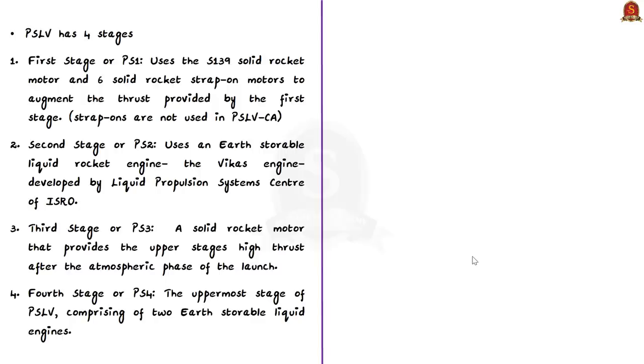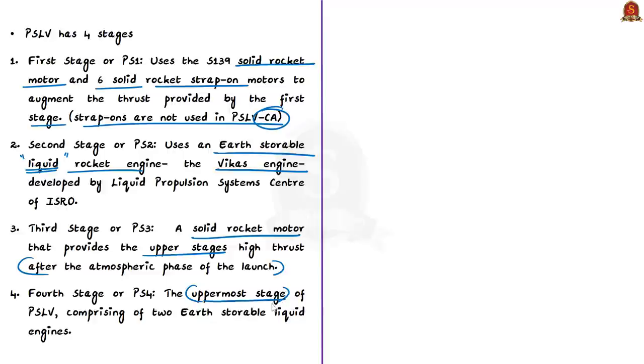PSLV has four stages. In the first stage or PS1, PSLV uses the S139 solid rocket motor. PSLV uses six solid rocket strap-on motors to augment the thrust in its PSLV-G and PSLV-XL variants. However, strap-ons are not used in PSLV-CA. In the second stage or PS2, PSLV uses an earth-storable liquid rocket engine, also known as the Vikas engine developed by the liquid propulsion system center of ISRO. The third stage or PS3 is a solid rocket motor. And the fourth stage or PS4 is the uppermost stage comprising of two earth-storable liquid engines.